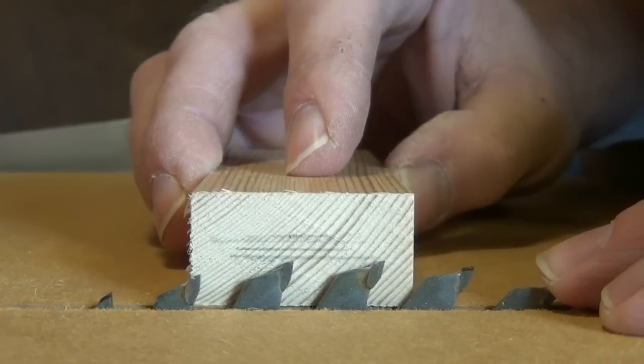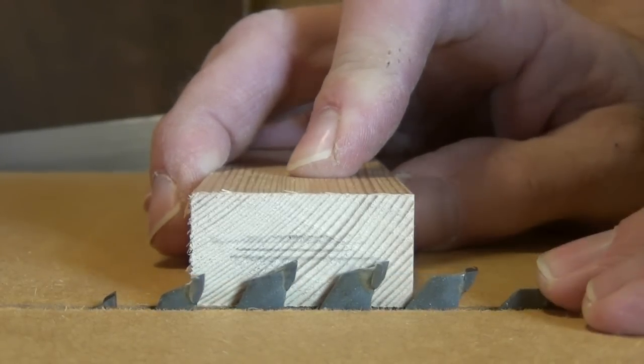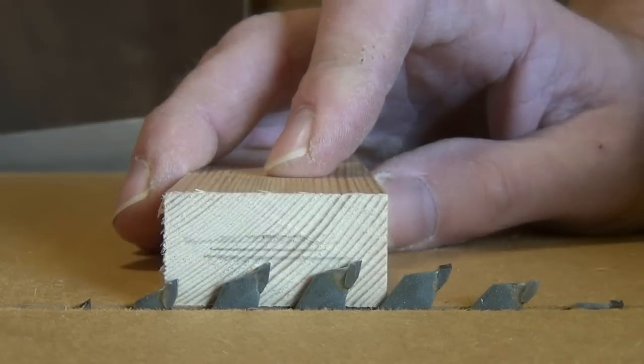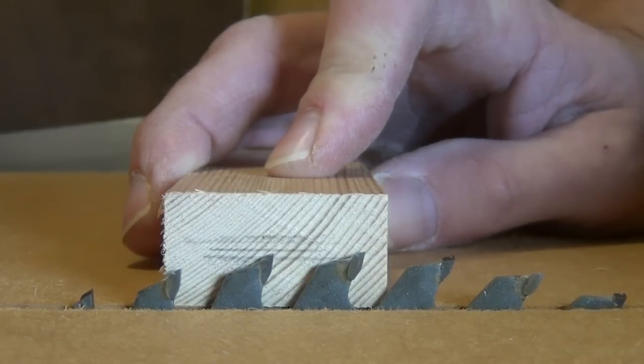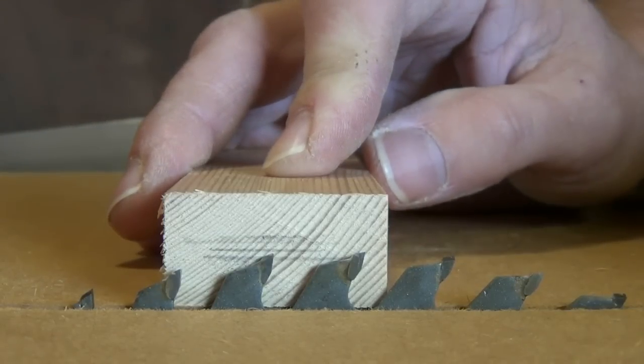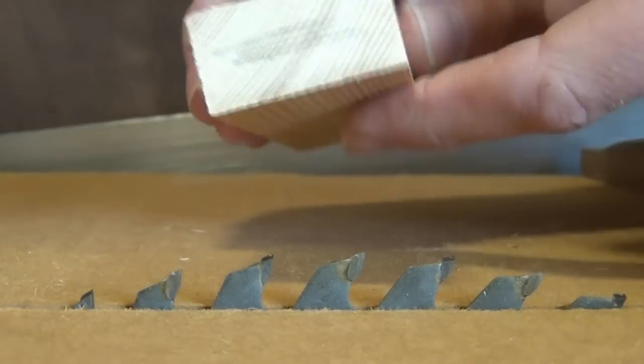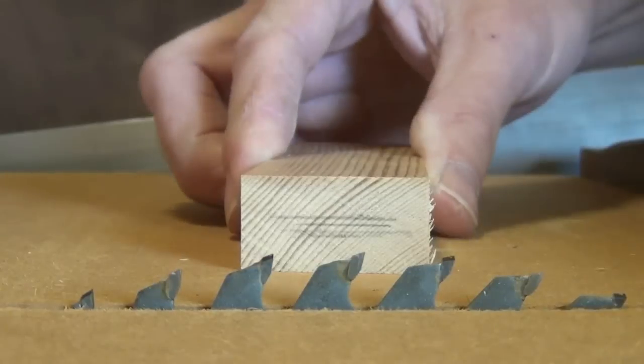Now we raise the blade until we're just below where we gauged as being the middle. Now we're going to take two cuts: one with this face down on the table and one with the opposite face down on the table.